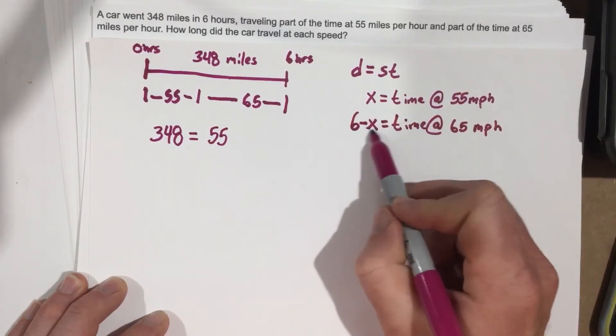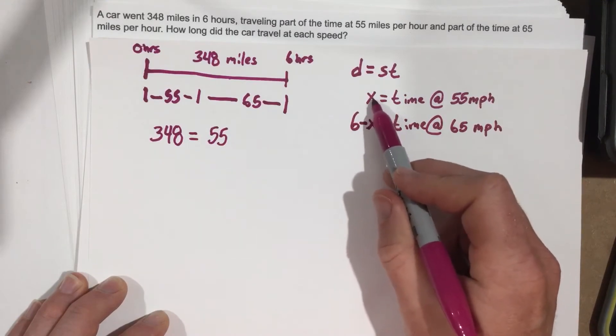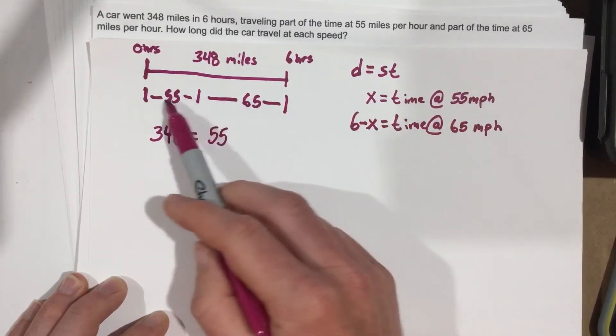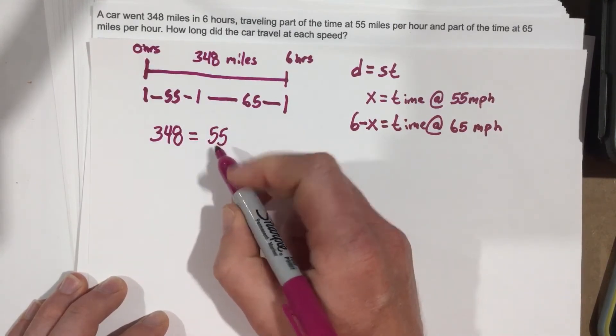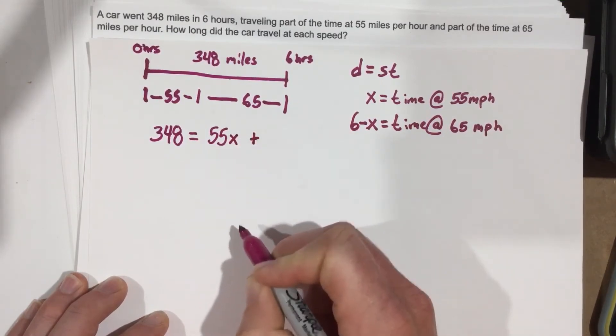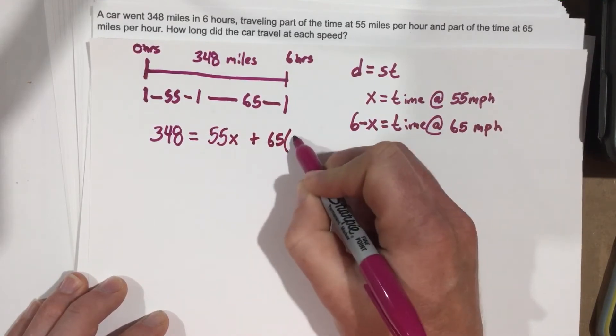And this part, hopefully that makes sense to you, that if you take the total time minus this time at 55, that just leaves you whatever's left. And that picture right here kind of describes that. So we're going to do 55 times its time, which is X, and we're going to add it with 65 times its time, which is six minus X.